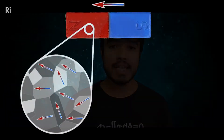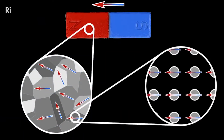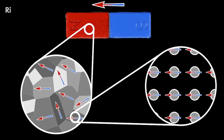The answer is, it depends on the arrangement of atoms. So in magnetic materials, atoms are arranged in such a manner that most of the North Pole and most of the South Pole are in the same direction. Hence, their overall magnetic field just adds up and creates a strong magnetic field.